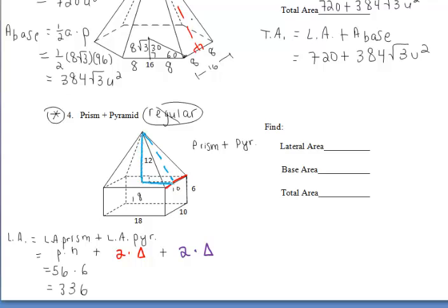To find the area of one red triangle, the base is 10 and we need the height. Since one side of the rectangle is 18, half of it is 9. This gives us a 9-12-15 Pythagorean family, so the height of the red triangle is 15. The area of both red triangles is 2 times one-half times 10 times 15 — the two and one-half reduce — giving us 150 units squared for the red triangles.